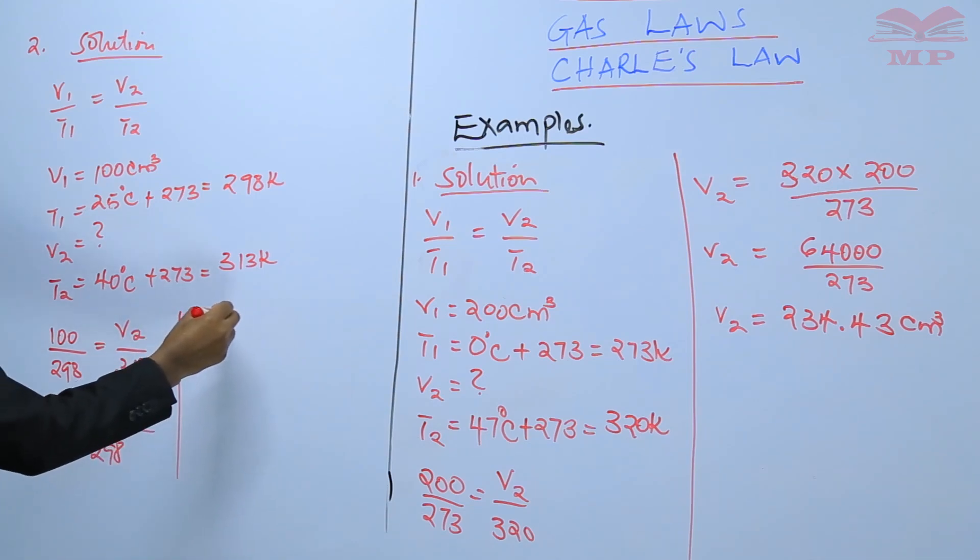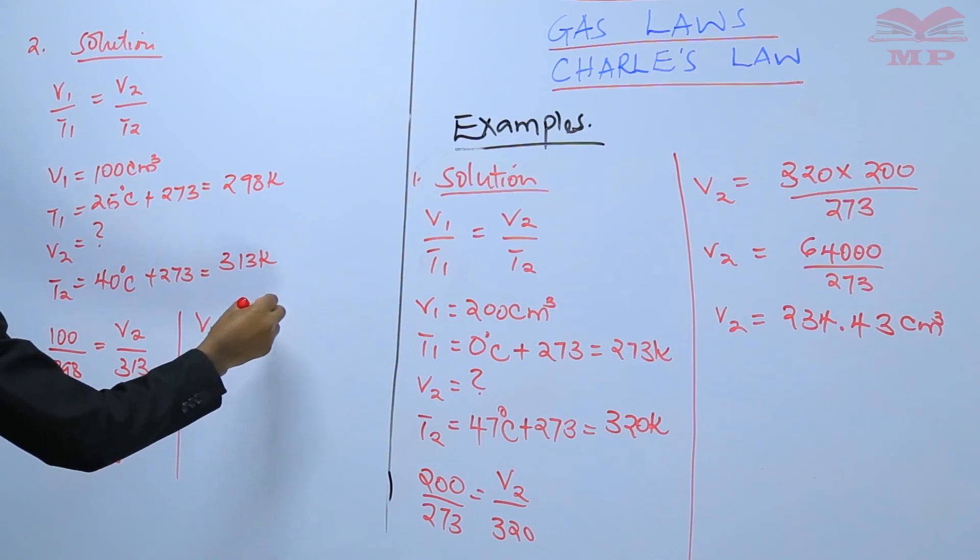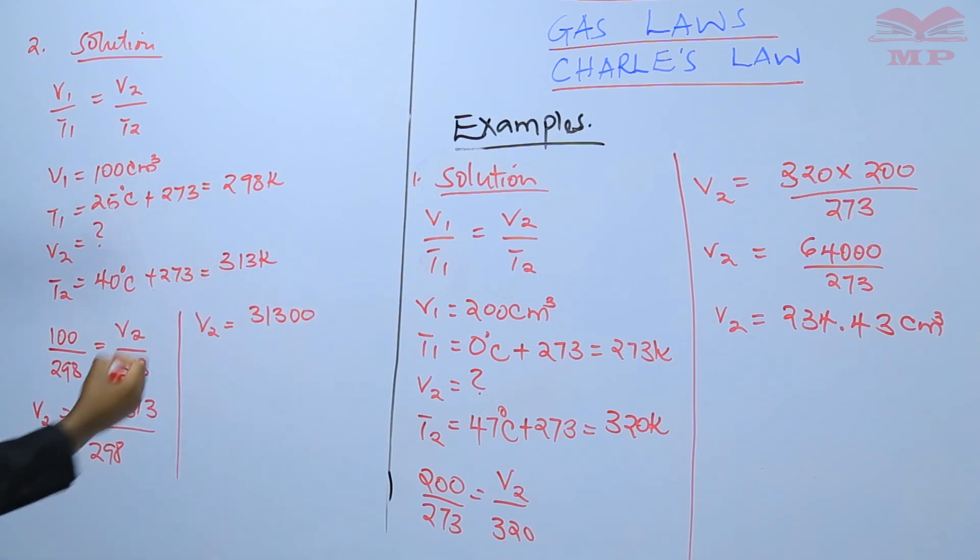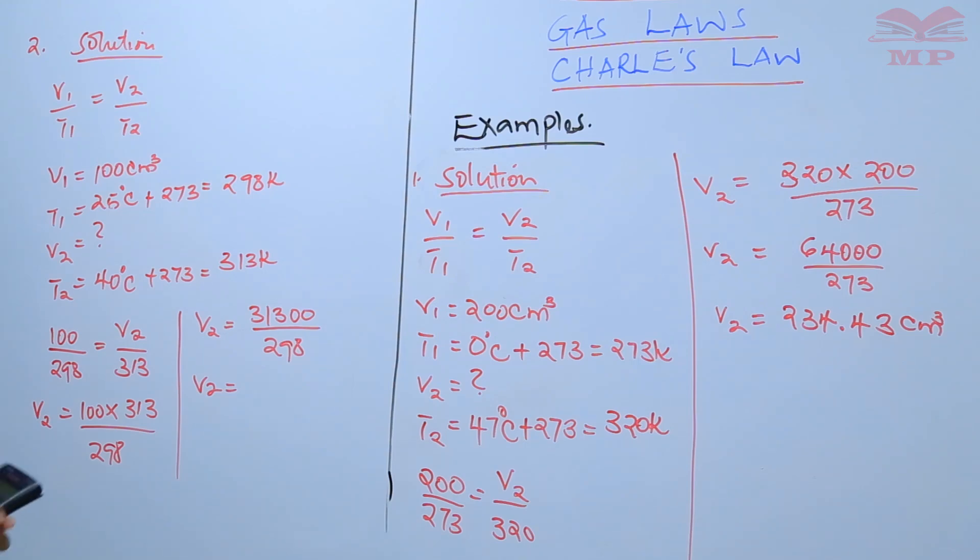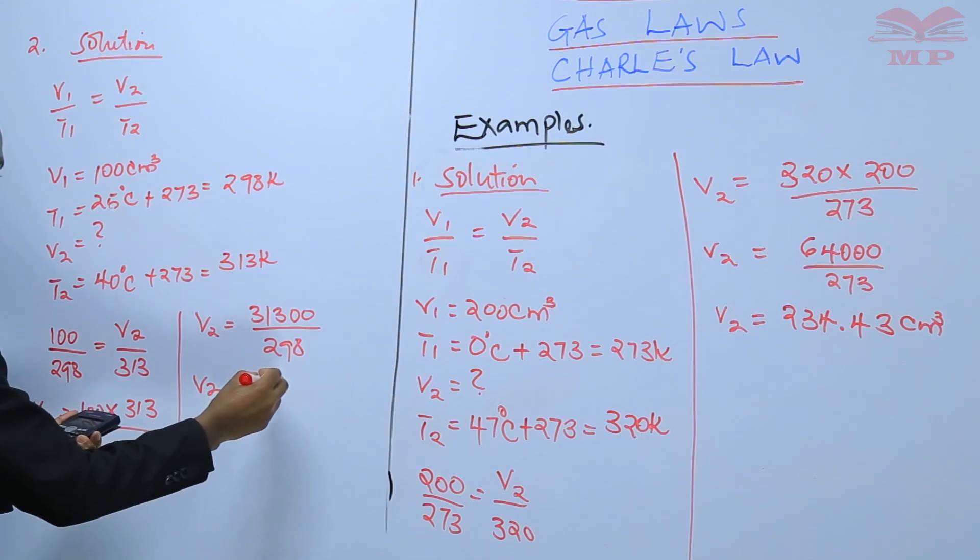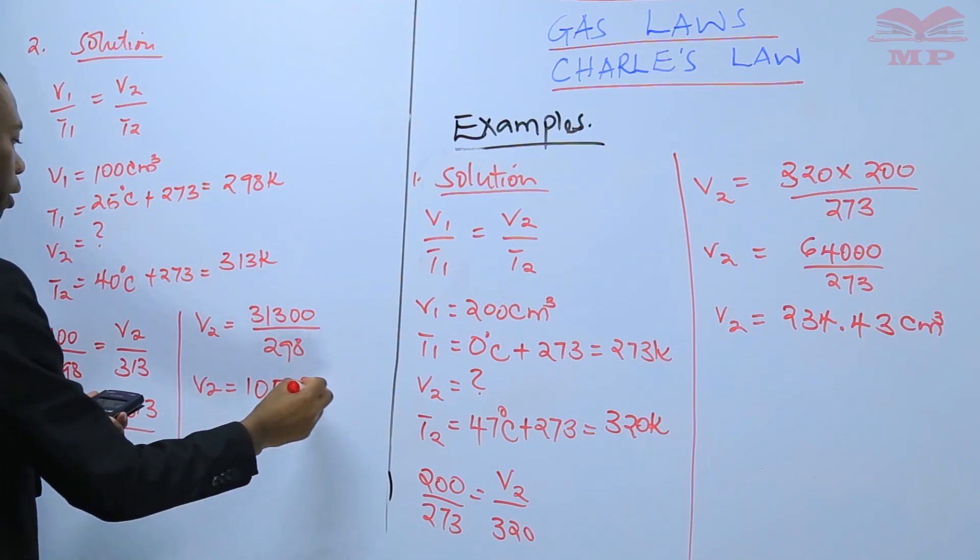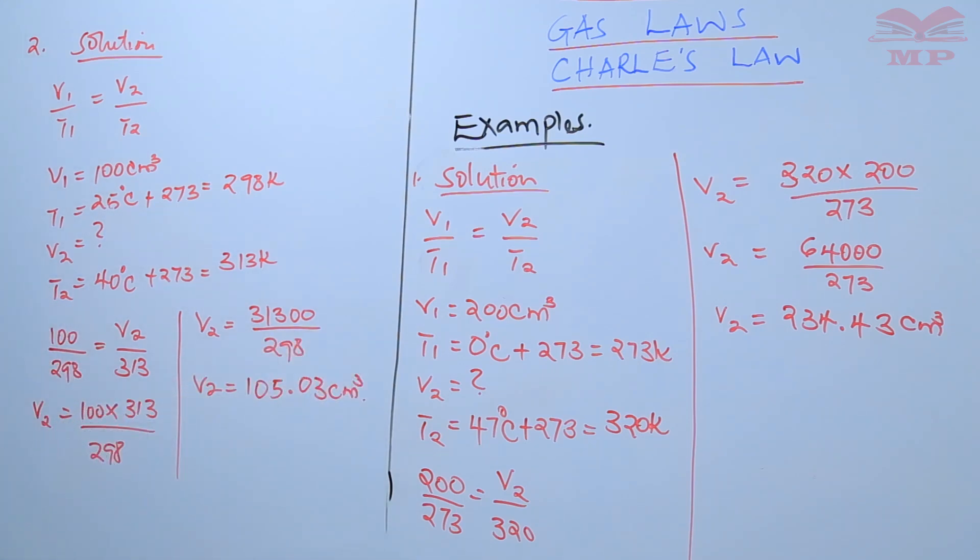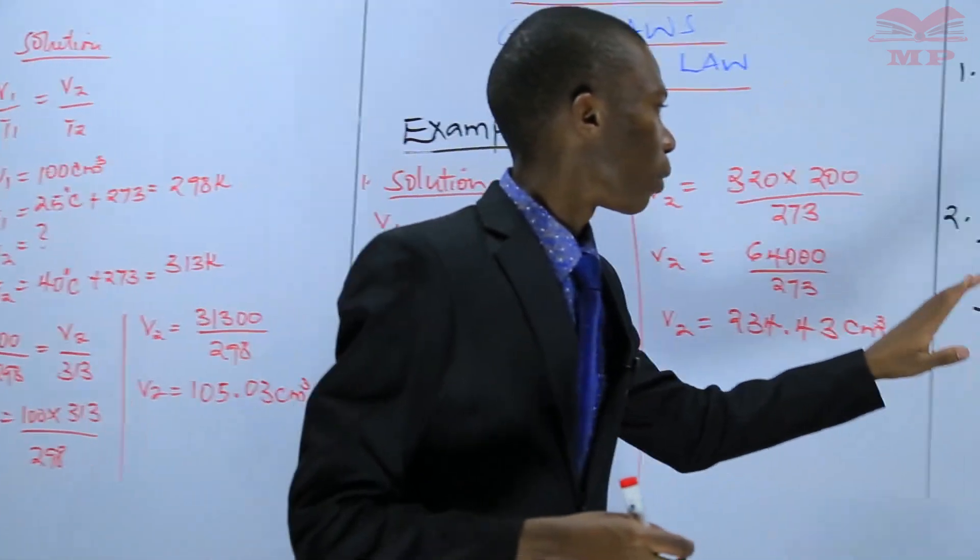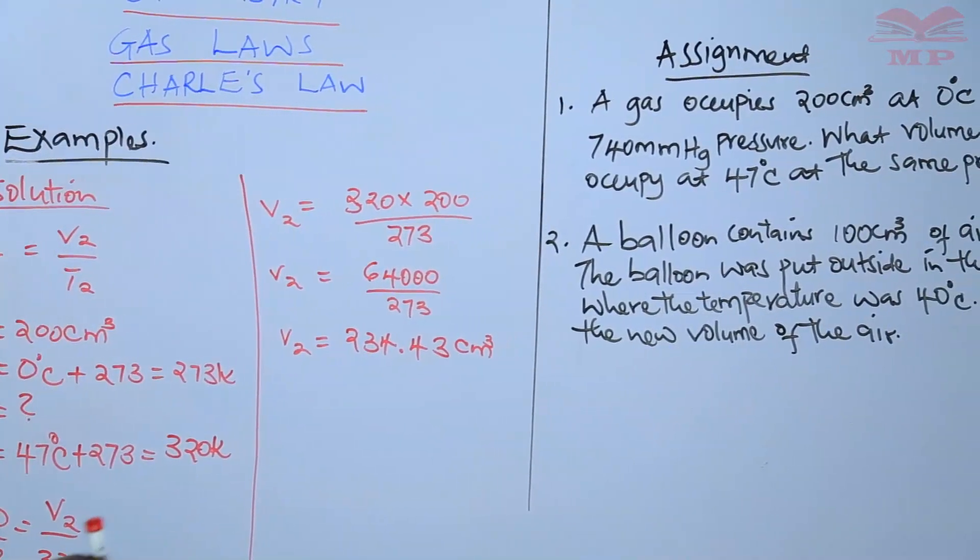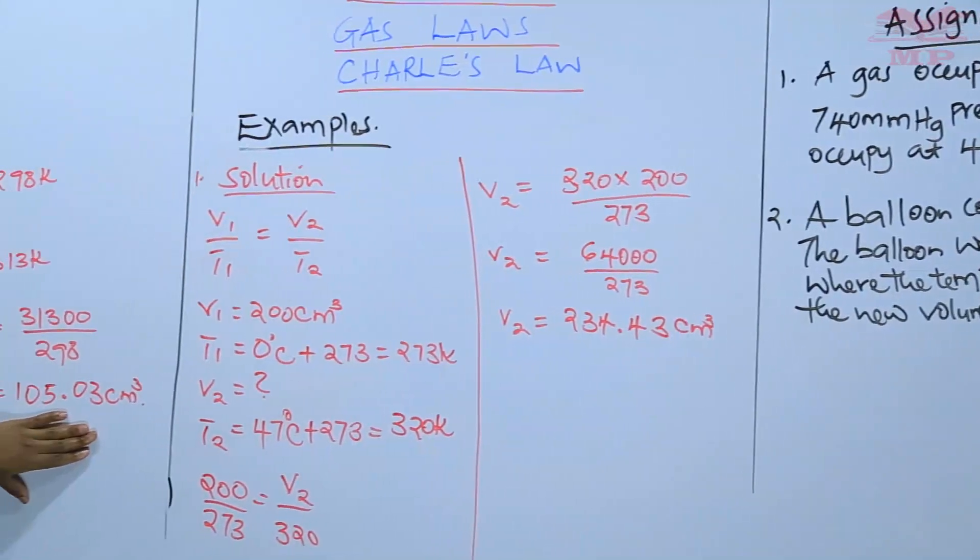Therefore, V2 is 331,300 divided by 298. V2 will be, this gives you 105.03 cubic centimeters. 105.03 cubic centimeters is the V2. When you left that balloon or when that balloon was put outside in the sun, when the temperature was 40 degrees Celsius, then the volume was 105.03 cubic centimeters at that temperature.